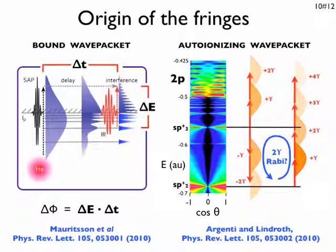Now, let us go back to the fully differential observables. What is the origin of those interference fringes?